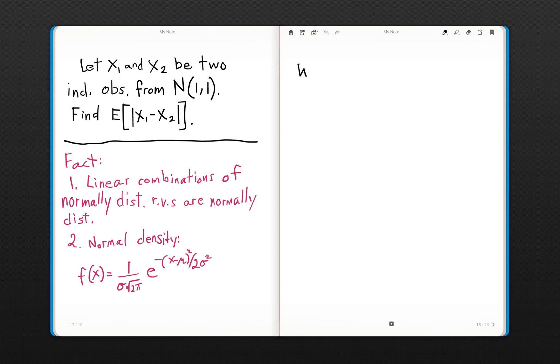So if we let W equal X1 minus X2, we can immediately employ our fact 1. We know now that W is also normally distributed. And we can get this expected value. The expected value of a random variable is the difference, in this case, of the expected values, which was actually given to us: expected value of X1 minus expected value of X2, which is equal to 1 minus 1. So we immediately get that the expected value of W is 0, which is not really a surprise.